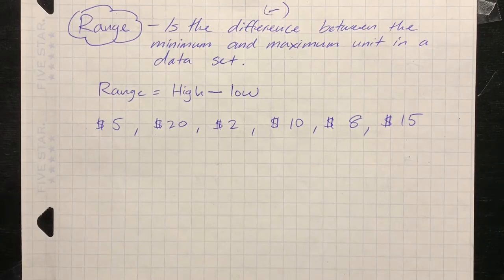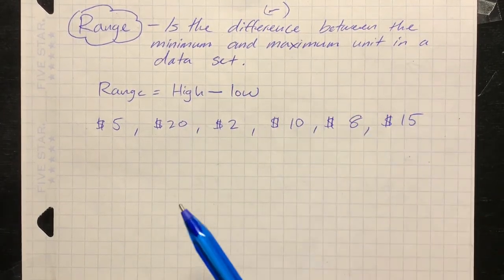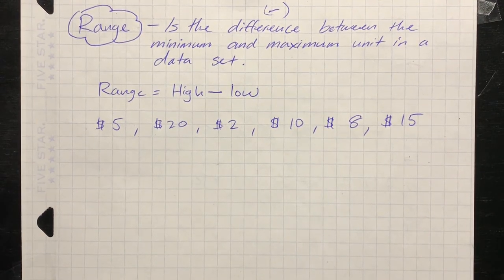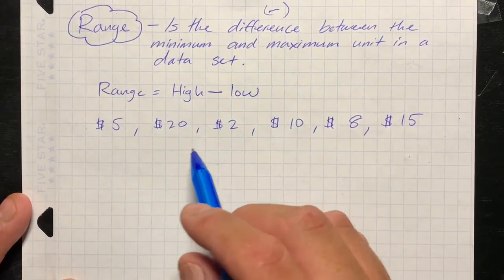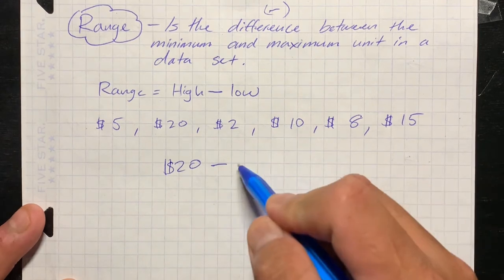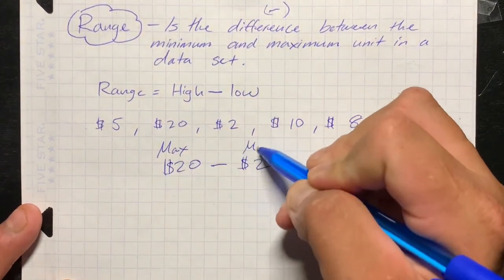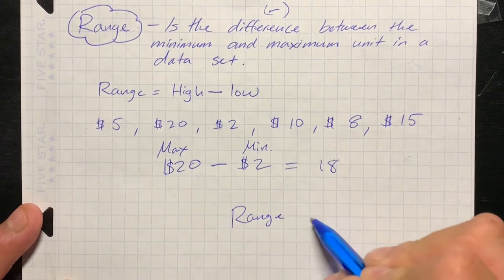The next measure of central tendency is the range. The range is the difference between the minimum and the maximum value in a data set. The range equals the highest value minus the lowest value. For example, imagine you and your friends wanted to find the range of money: one friend had five dollars, another twenty dollars, two dollars, ten dollars, eight dollars, and fifteen dollars. The maximum is twenty dollars minus the minimum of two dollars — twenty take away two is eighteen. Your range equals eighteen.